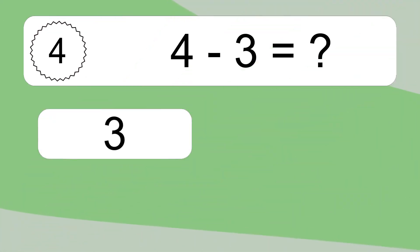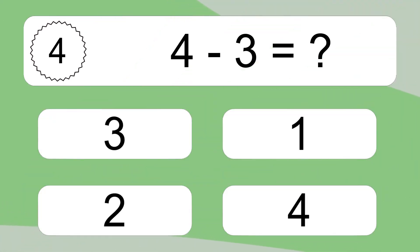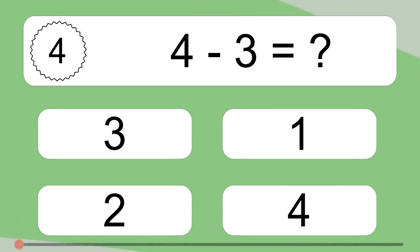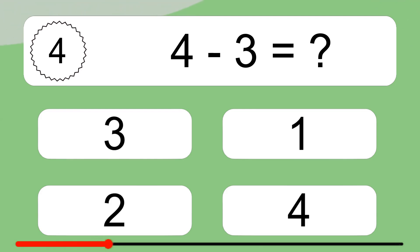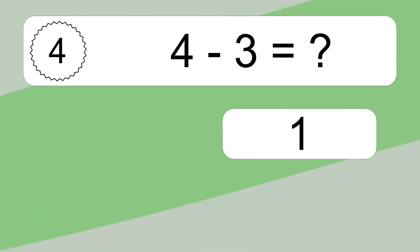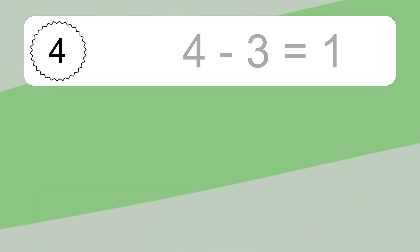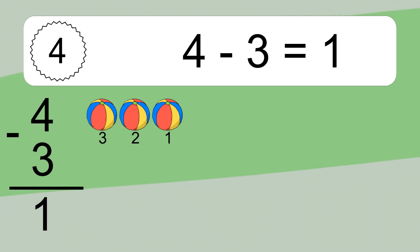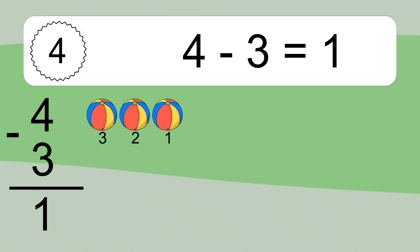4 minus 3 equals what? 4 minus 3 equals 1. Let's count it: 3, 2, 1.